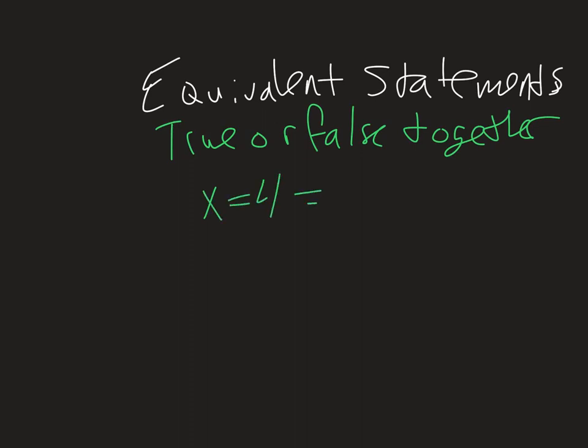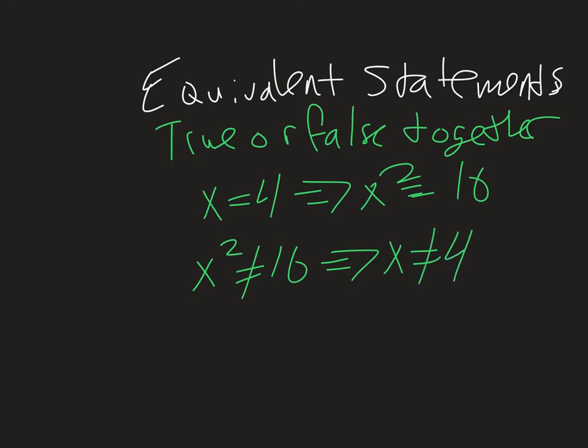This would be equivalent to if x squared does not equal 16, then x does not equal 4. And this is where we'd have to use truth tables, which I don't have time to get to in this video. But I will post another one using truth tables to kind of express this a little better. But the idea behind an equivalent statement is that if this one is true, then so is this one. If it's false, then the other one's false. They're both true or false at the same time.